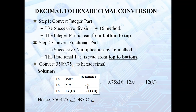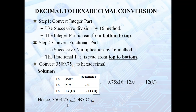Now consider the fractional part 0.75. Use successive multiplication by 16. Take 0.75 multiplied by 16. Keep the integer part, but the fractional part here is 0. The integer part is 12, and the hexadecimal equivalent of 12 is C. Therefore, the hexadecimal equivalent of the decimal number is DB5.C base 16.